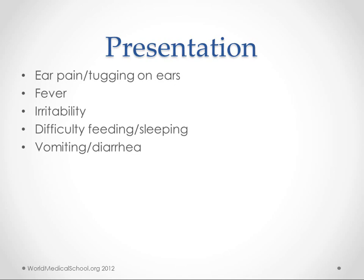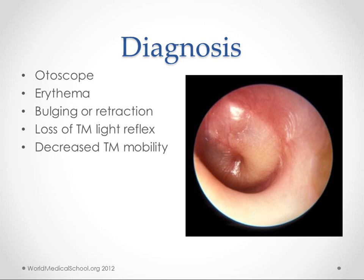These kids come in with problems — they're crying, they're tugging on their ears. So you look in the ear just like you do with every kid, and you see some redness, sometimes bulging, sometimes retraction, and you get loss of or displacement of the light reflex. If you're going to use your insufflator bulb — which I haven't seen a lot of people do, but it seems like a pretty good idea — you'll see a decrease in mobility of the tympanic membrane.